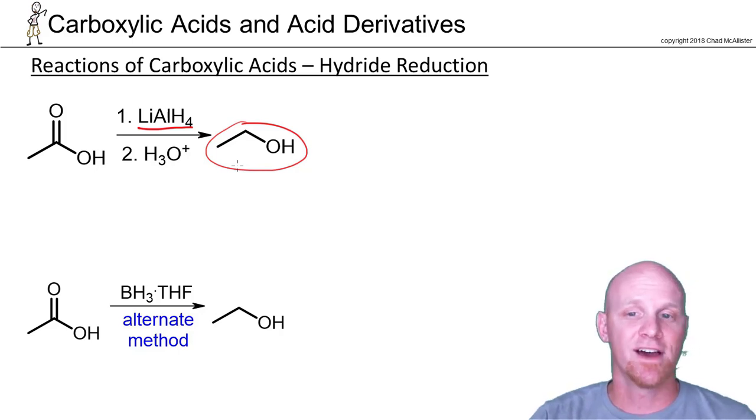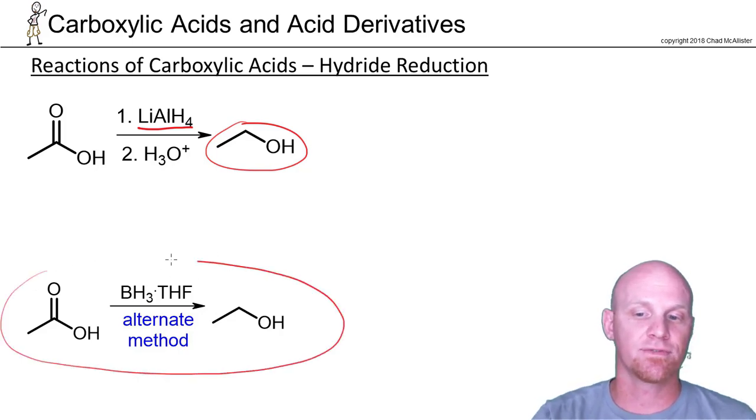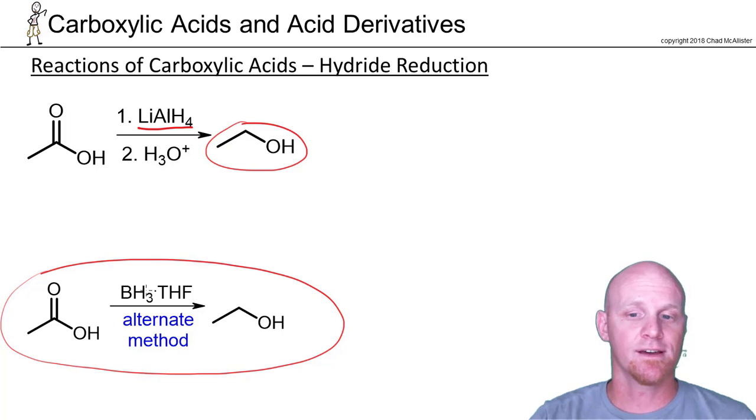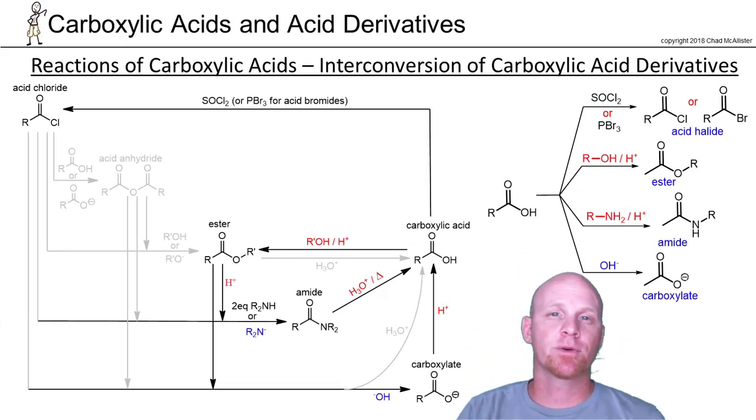In this case it will still reduce it all the way down to an alcohol, similar to what we've seen with the other carboxylic acid derivatives. I do want to again point out though that BH3·THF—if we use borane—is selective for a carboxylic acid, whereas LAH will reduce everything. Borane, I should say, will reduce selectively the carbonyl of a carboxylic acid to an alcohol.